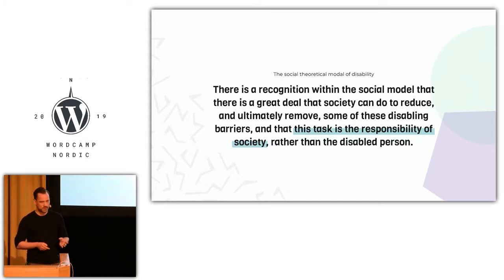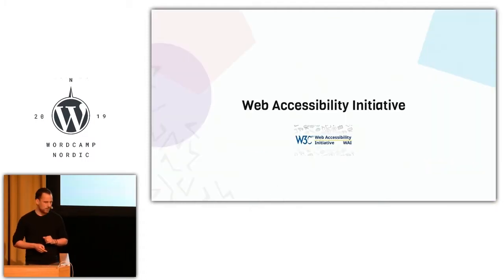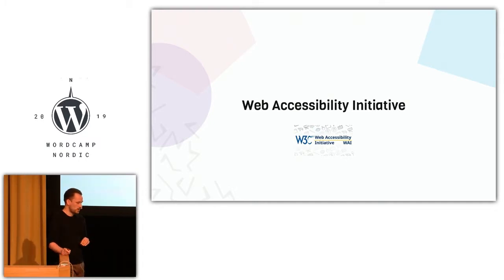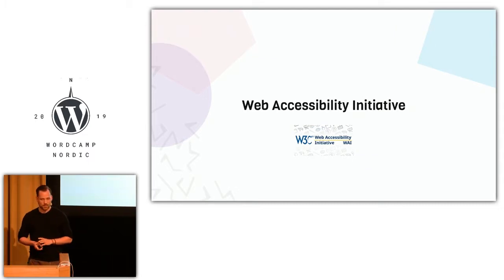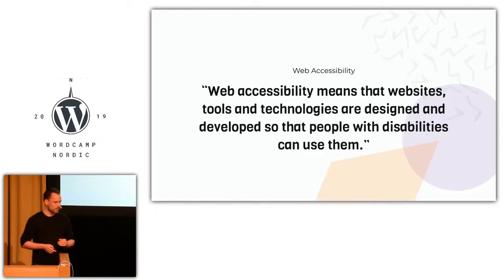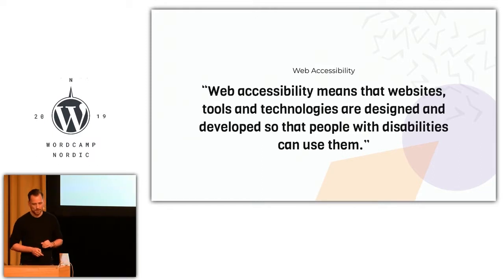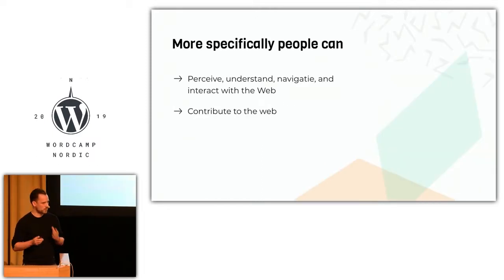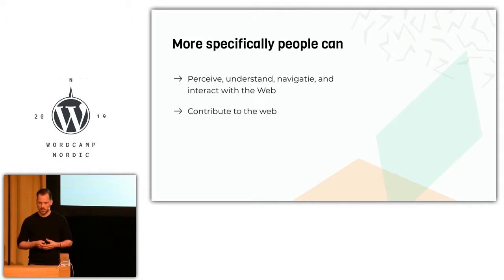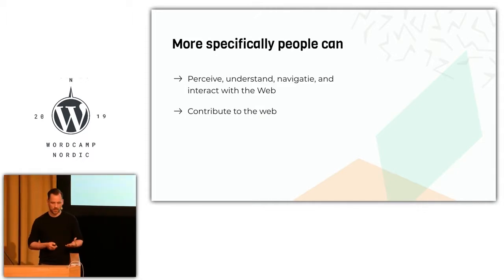The social model recognizes that there's a lot that society can do to remove these barriers. Fortunately, there's a bit more. W3C also has a Web Accessibility Initiative with a whole section on their website that goes further than the original definition. Accessibility is about people — being able to perceive, understand, navigate and interact with the web, and even contribute to the web.